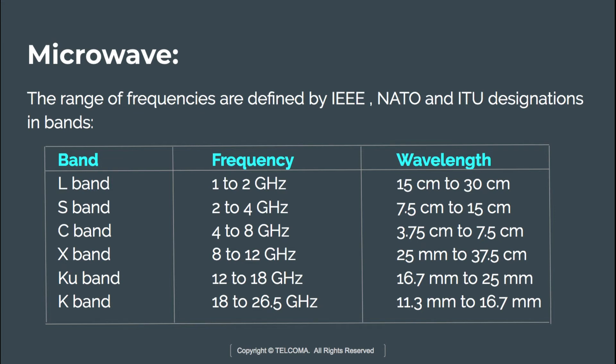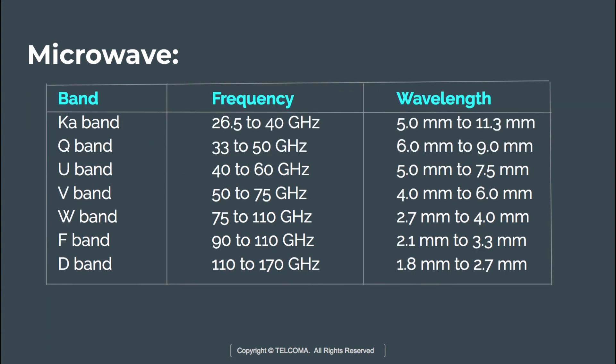The Ku band is used for satellite communication in adverse weather conditions. The K band spans part of the microwave domain and part of the infrared domain — the microwave part is used for radar and satellite applications, while the infrared part is used for astronomical observation. The Ka and Ku bands are defined by IEEE, while the remaining bands — U, V, W, F, and D bands — are defined by NATO and are also used in radar communications.